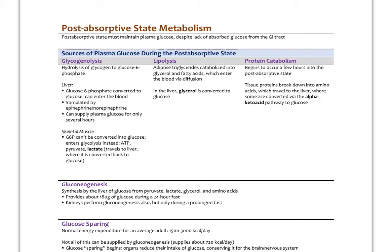After four or so hours after eating, we enter the post-absorptive state. Blood glucose is maintained in three primary ways. First, via glycogenolysis: glycogen in the liver is broken down into glucose-6-phosphate, the liver removes the phosphate group, and glucose enters the blood. This is stimulated by epinephrine and glucagon, and can supply blood glucose for several hours.